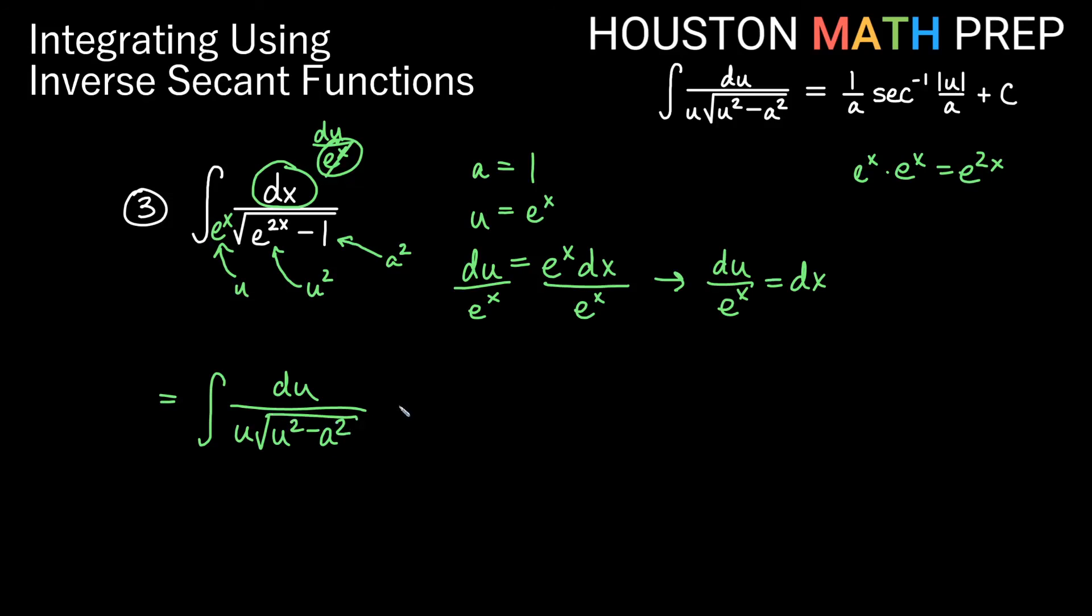We have our, of course, u squared minus a squared. And now we just use our definition. So we get 1 over a inverse secant of u over a plus c. We'll go ahead and put our stuff in there. Let's go ahead and skip the over 1. So we have 1 over 1 that just becomes secant here, inverse secant.